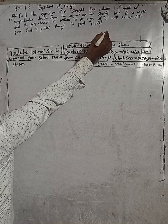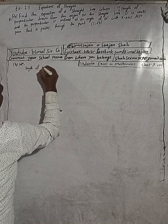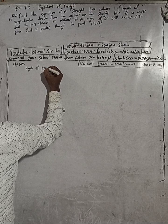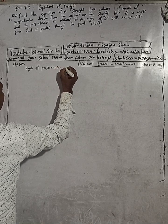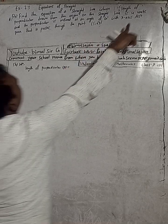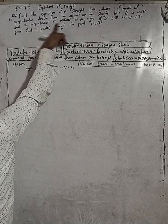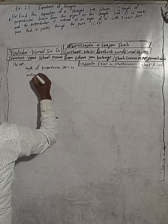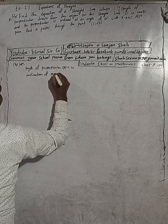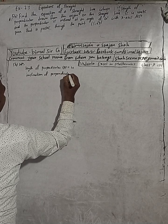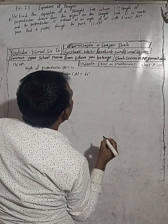So from here we can write: length of the perpendicular, that means P is equal to 4 units. And inclination of the perpendicular, indicated by alpha, is equal to 60 degrees with the x-axis.